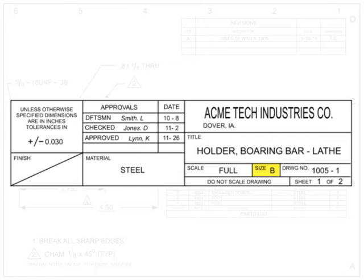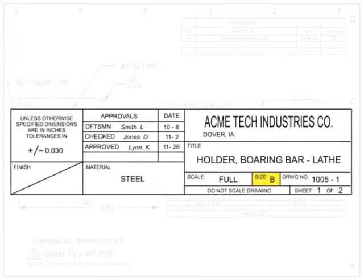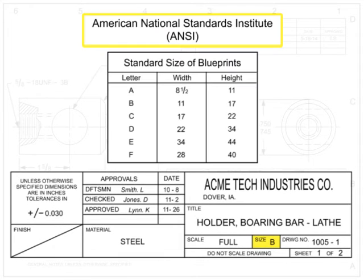The size of the drawing indicates what size paper the drawing should be printed on to be true to scale. There are many different types of drawing size standards, but the most commonly used in the United States is the American National Standards Institute, ANSI, which is also required by the ASME Y14 drawing standard.